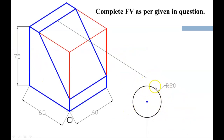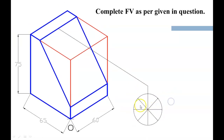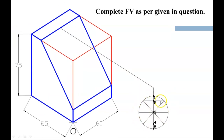This line is the vertical center line of the front view. Now draw a circle of radius 20 as given in the question. Divide this circle into 8 equal parts. Draw horizontal lines so that they intersect this vertical center line, giving you the required points: 1, 2, 3, 4, and 5. These points are required for the projection.